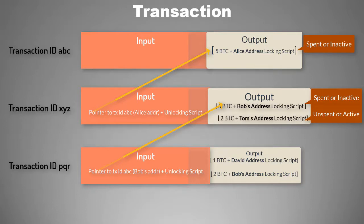So after this transaction, this output became spent or dead or inactive, and these outputs are unspent transaction outputs. There is a special acronym for unspent transaction output and it is called UTXO.